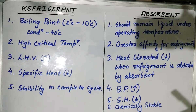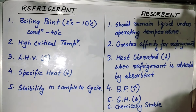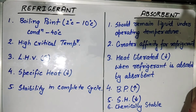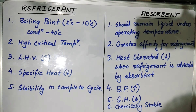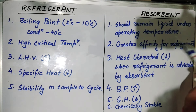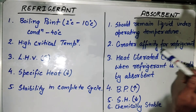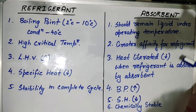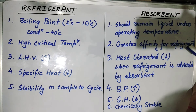Now we will find what is the operating condition for an absorbent. The first thing is that it should remain liquid under the operating temperature, because an absorbent is always liquid. The second thing is that it should have a greater affinity for the refrigerant, so as it is an absorbent it has to absorb the refrigerant. The heat liberated when the refrigerant is absorbed should be much low — in order to have a good absorbent, the heat should not be liberated much when it absorbs the refrigerant.